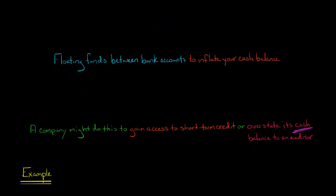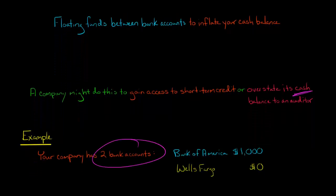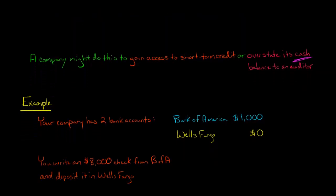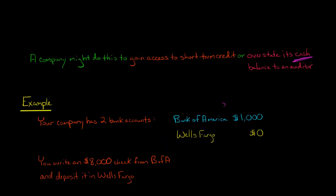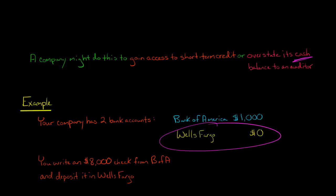Let me show you how this works. Let's say a company has two different bank accounts: an account with Bank of America that has $1,000 in it, and an account with Wells Fargo that has $0. The company could write a check off the Bank of America account for $8,000 and deposit it into the Wells Fargo account, bringing the Wells Fargo balance up to $8,000 today.